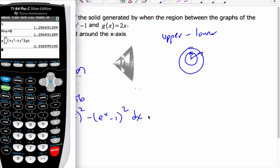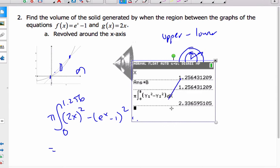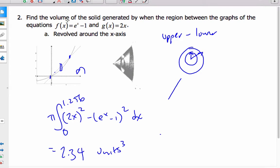And my area, my volume is 2.3. So I get approximately 2.34 units cubed. That's revolved around the x-axis. So that is what we do for volumes of revolutions between two functions.